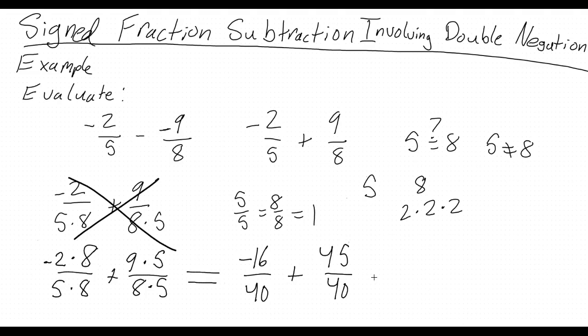Now that we have the same denominator, we can simplify this further to negative 16 plus 45 over 40, which simplifies again to 29 over 40.